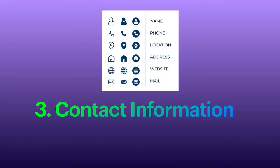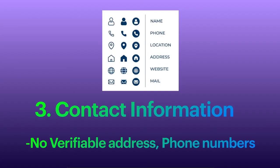Next is the contact information. When we look at the contact information displayed on the website, there will not be a verifiable address and the phone numbers may not be valid. Sometimes the email addresses mentioned in the journal may not exist or may not have institutional email IDs.